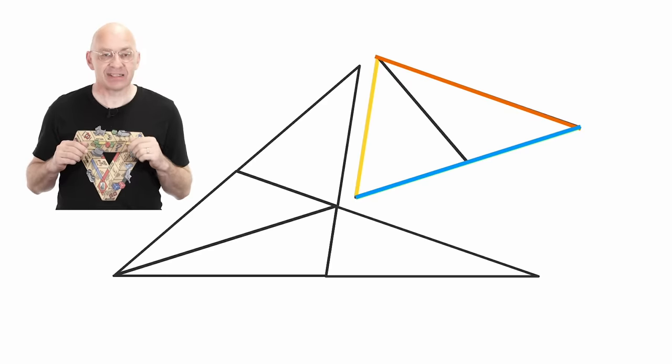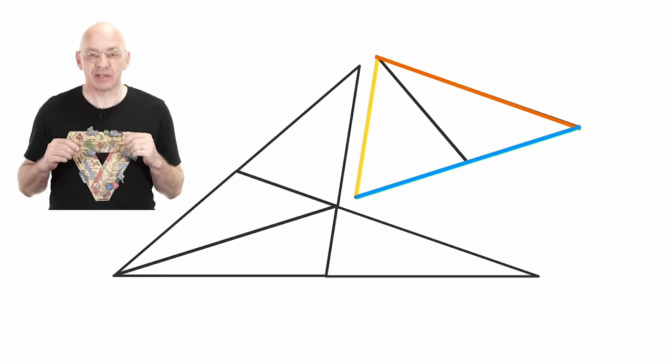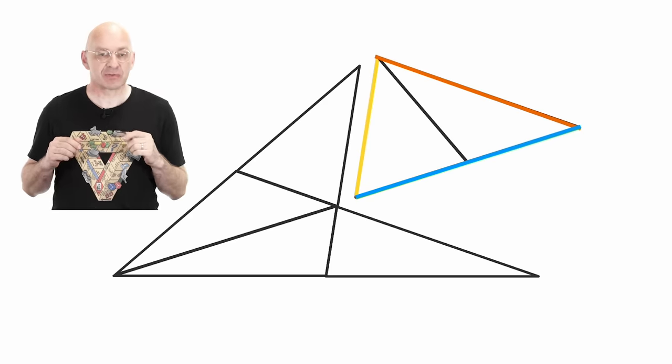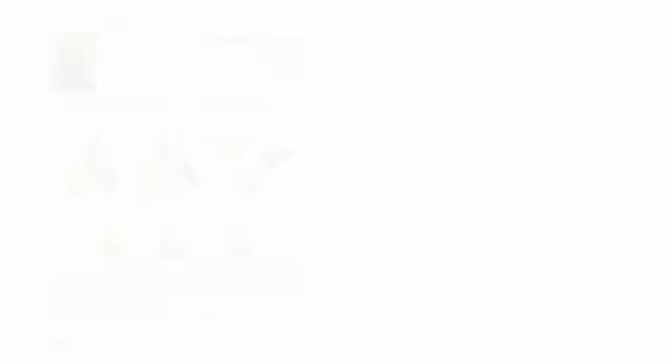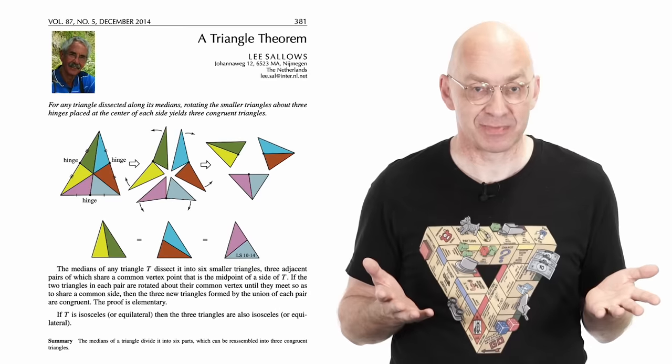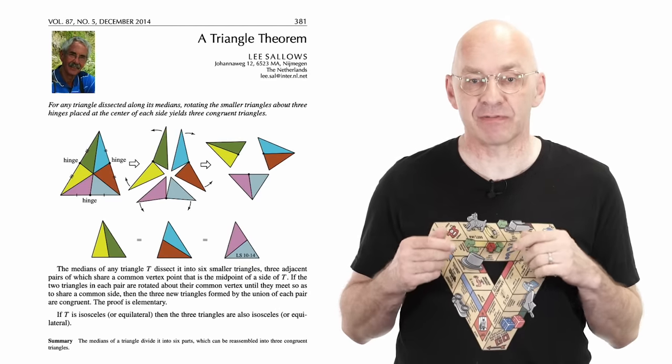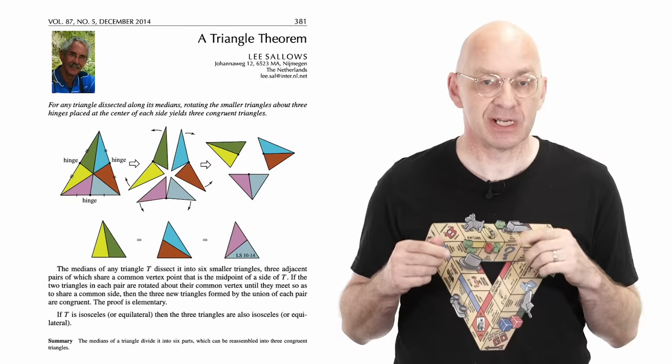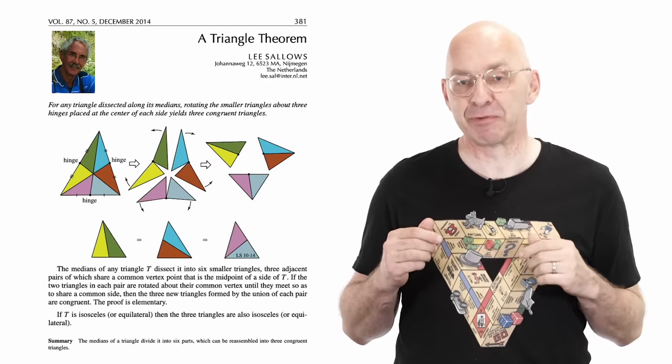Finally, here's the article by Lee Sallows about his discovery in the December 2014 issue of the mathematics magazine. Just one page. And so it's really possible, even today, after thousands of years of triangle spotting, to discover new simple and beautiful mathematics.